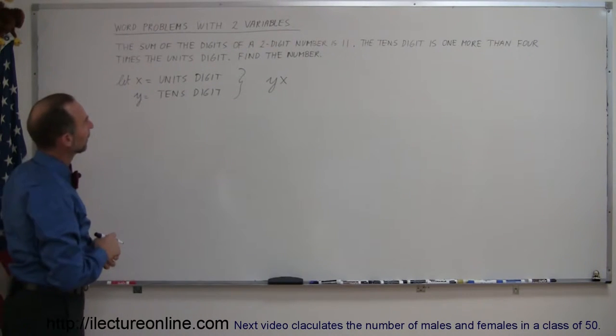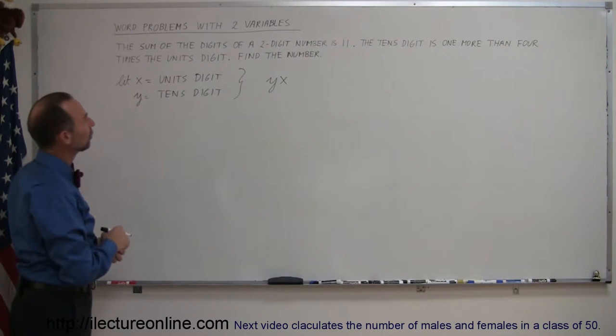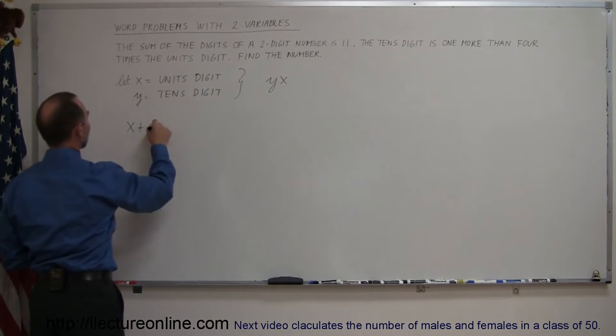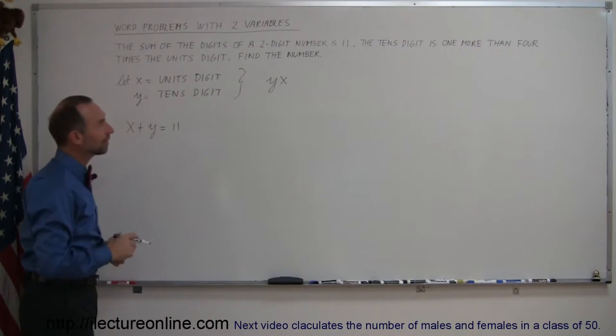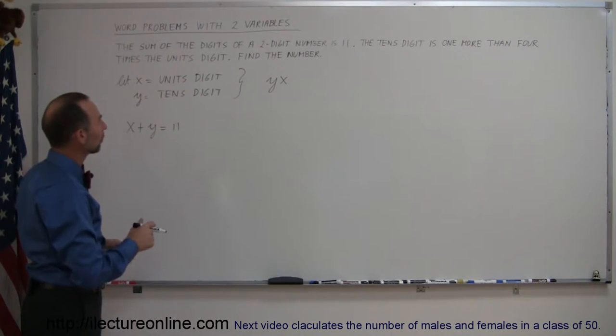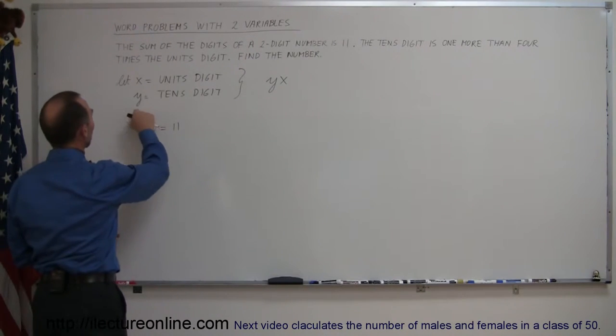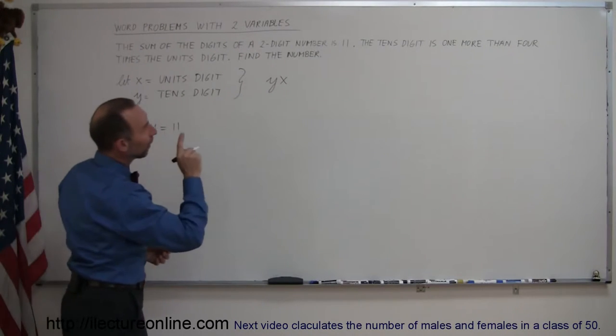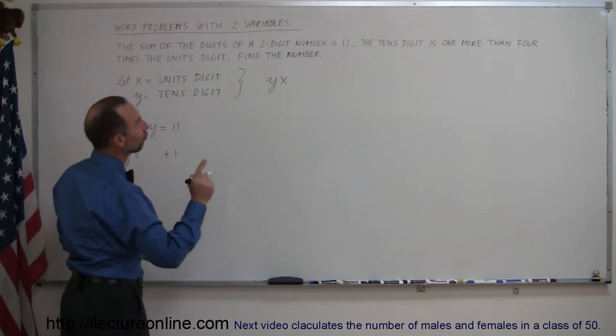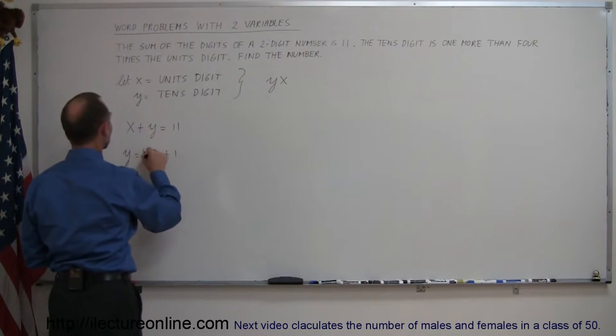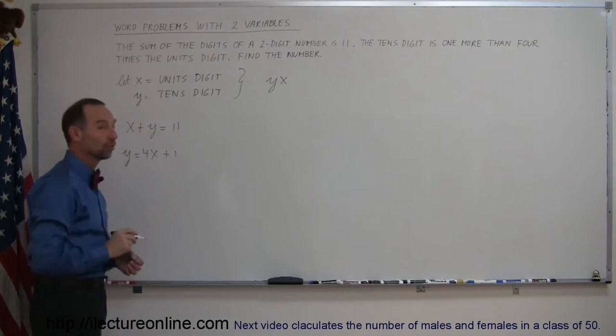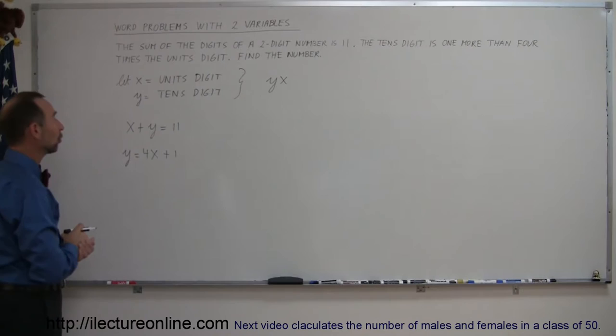They tell us the sum of the digits of the two-digit number is 11, which means x plus y equals 11. They also tell us the tens digit is one more than four times the units digit. So the tens digit y is equal to one plus four times the units digit: y equals 4x plus 1. That's how you end up with your two equations.